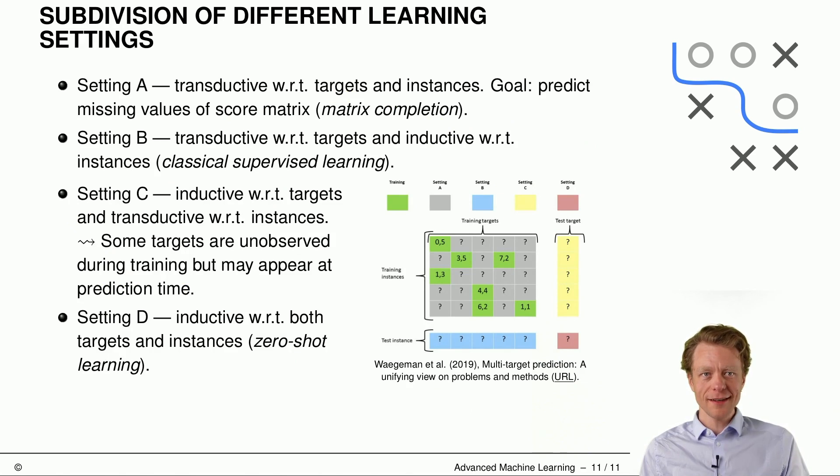Now that we have transductive and inductive, we can, of course, make up a two-cross-two matrix with four settings here. Transductive with respect to targets and instances is, for example, predict the missing values of a score matrix. Then setting B is classical supervised learning, with transductive with respect to targets and inductive with respect to instances. And setting C turns it exactly around. We are inductive with respect to targets and transductive with respect to instances. So some targets are unobserved during training, but may appear at prediction time. And then last setting D is inductive with respect to both targets and instances. We can also call this zero-shot learning.